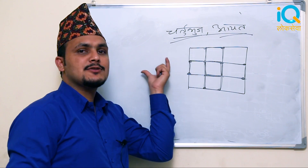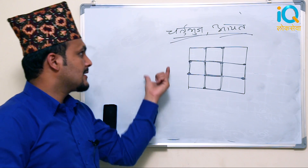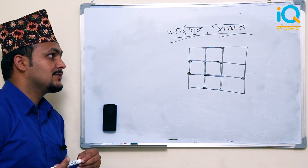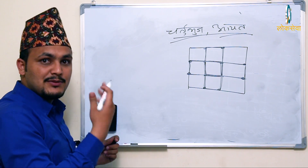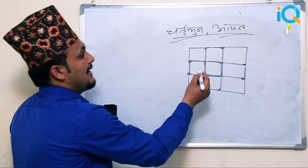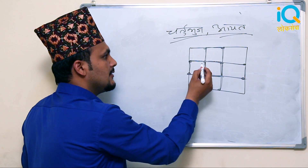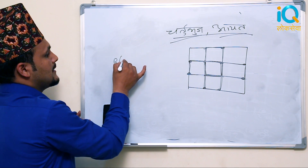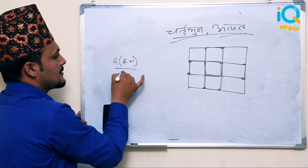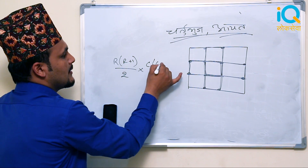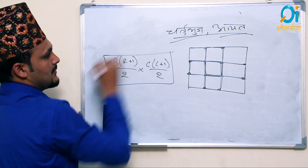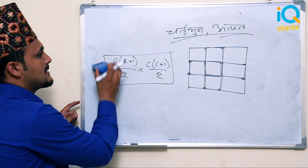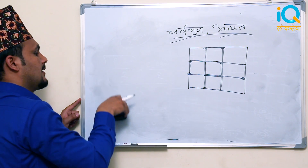This formula is row into row plus one upon two, into column into column plus one upon two. This is the formula. We have to learn the same method. The formula is numbering. We use the formula for the same method. This is the formula.